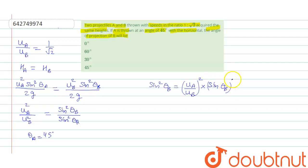So, we can write sin square theta B equal to U A divided by U B square multiplied by sin theta A square. We can put here 1 divided by root 2 square multiplied by sin 45 square. So, it becomes 1 by 2 multiplied by 1 by root 2 square is 2.